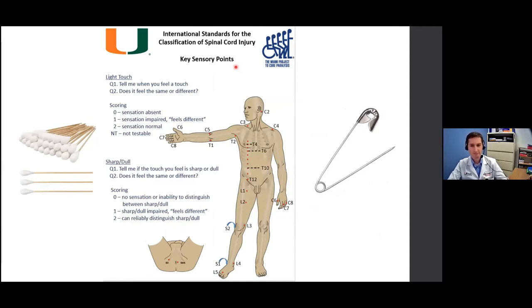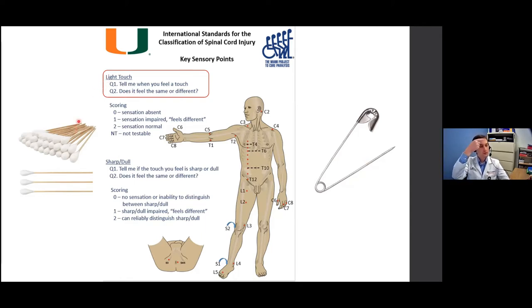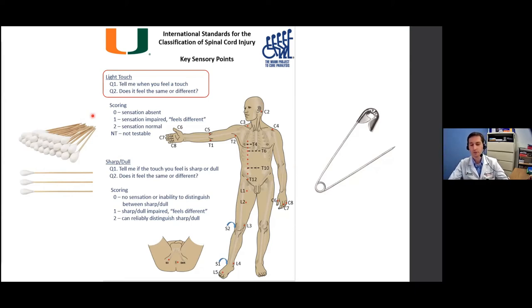We always start with the sensory part first. All you need is a cotton swab and a safety pin — plus knowledge and a bed. We start with light touch: the cotton swab is used to assess light touch, and the safety pin is used to assess pin prick — sharp and dull sensation. For light touch, we swipe the cotton swab on the subject's forehead or cheek and say: this is your baseline. Remember this sensation, and as we go through different areas of your body, tell me if you feel the touch the same, differently, or not at all.